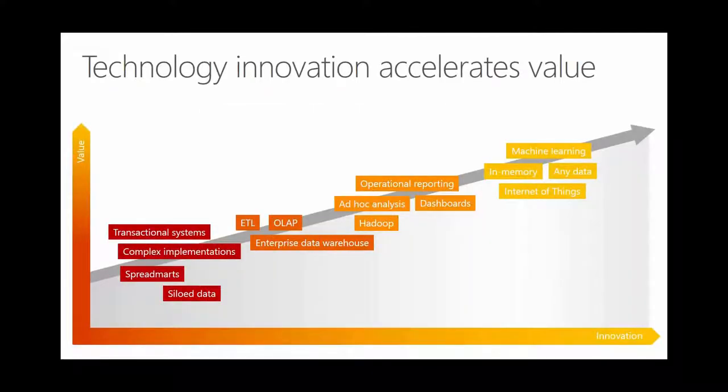Many companies are unfortunately still at the stage where they're not innovating much — they have spreadsheets and data marts spread everywhere. The next level is the enterprise data warehouse with analytical processing, building cubes, giving users the ability to slice and dice, incorporate Hadoop and semi-structured data, and do ad hoc queries. Finally, the most innovation comes when you dive into machine learning and Internet of Things, where you can not only see where you've been but predict where you're going in the future.